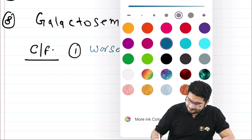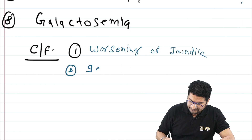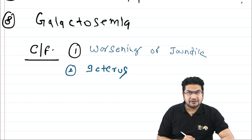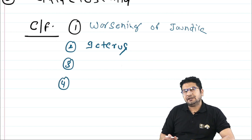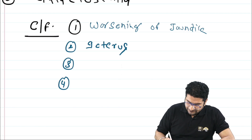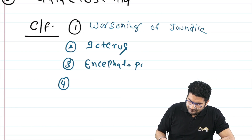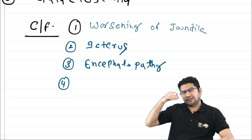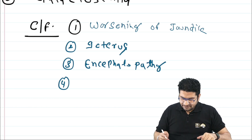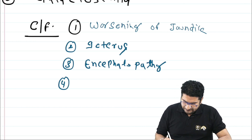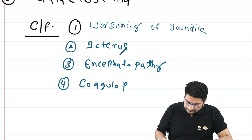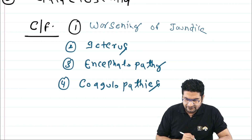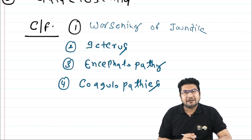The two most important features needed to define liver failure are encephalopathy and coagulopathy. The patient will have neurological changes — encephalopathy — and can develop cerebral edema, asterixis, and flapping tremors.